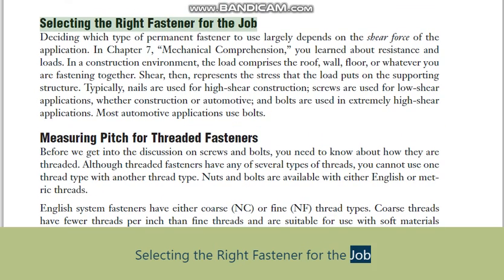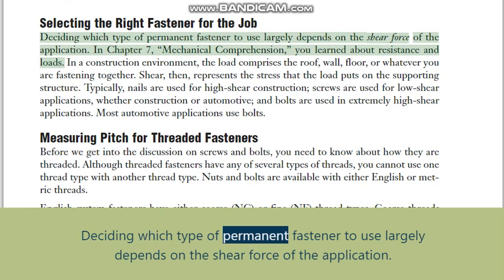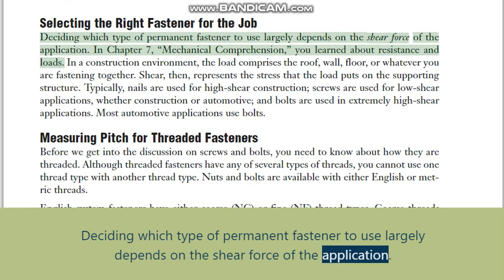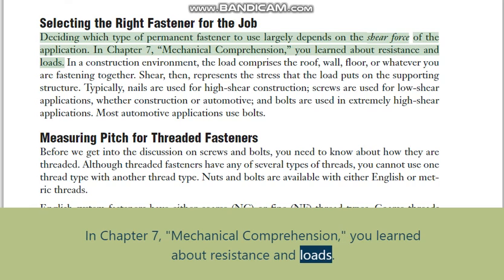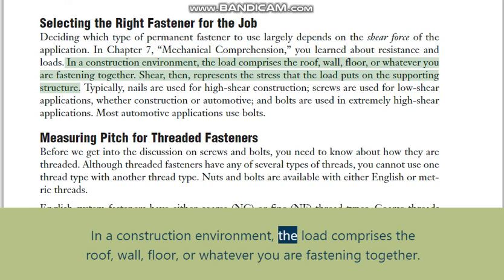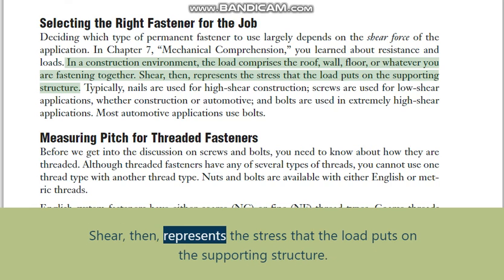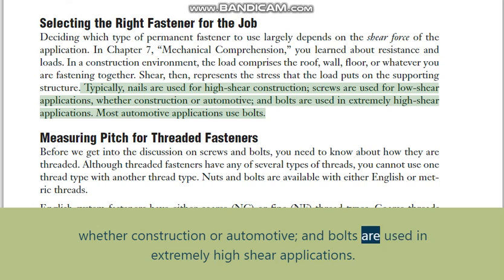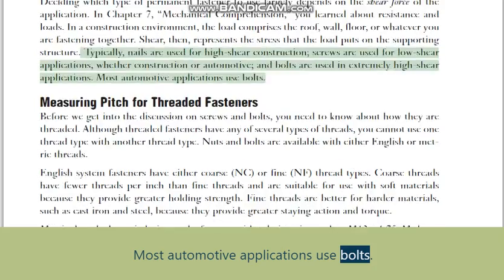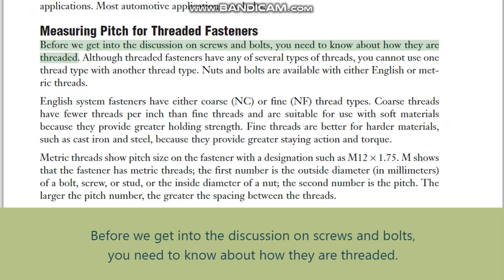Selecting the right fastener for the job: deciding which type of permanent fastener to use largely depends on the shear force of the application. In a construction environment, the load comprises the roof, wall, floor, or whatever you are fastening together. Shear represents the stress that the load puts on the supporting structure. Typically, nails are used for high-shear construction, screws are used for low-shear applications whether construction or automotive, and bolts are used in extremely high-shear applications such as most automotive applications.